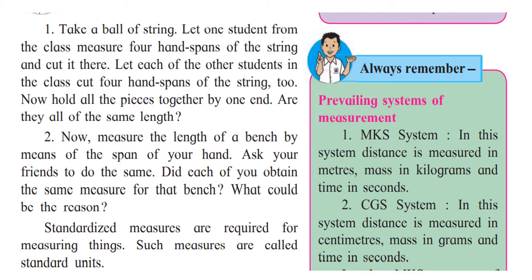Always remember the prevailing systems of measurement. There are two systems. One is called the MKS system: in this system, distance is measured in meters, mass in kilograms, and time in seconds. So MKS stands for Meter-Kilogram-Second. Similarly, we have the CGS system: in this system, distance is measured in centimeters, mass in grams, and time in seconds. Whenever we measure smaller units, we use centimeters, grams, and seconds.